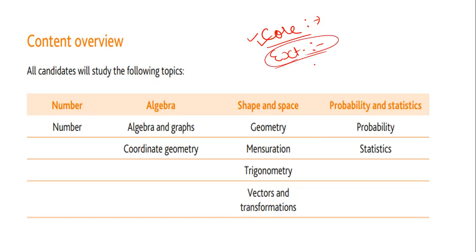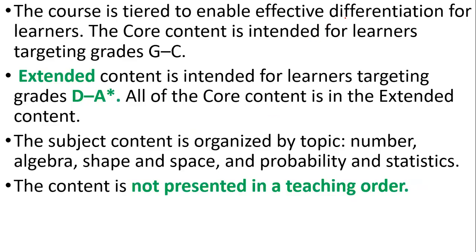Extended should be taken by students who want to make their career in mathematics or engineering, where maths plays a very important role. Students who are thinking about taking O-level mathematics in the future — for them extended is the best option. In core, the highest grade you can get is C and the lowest grade is G.